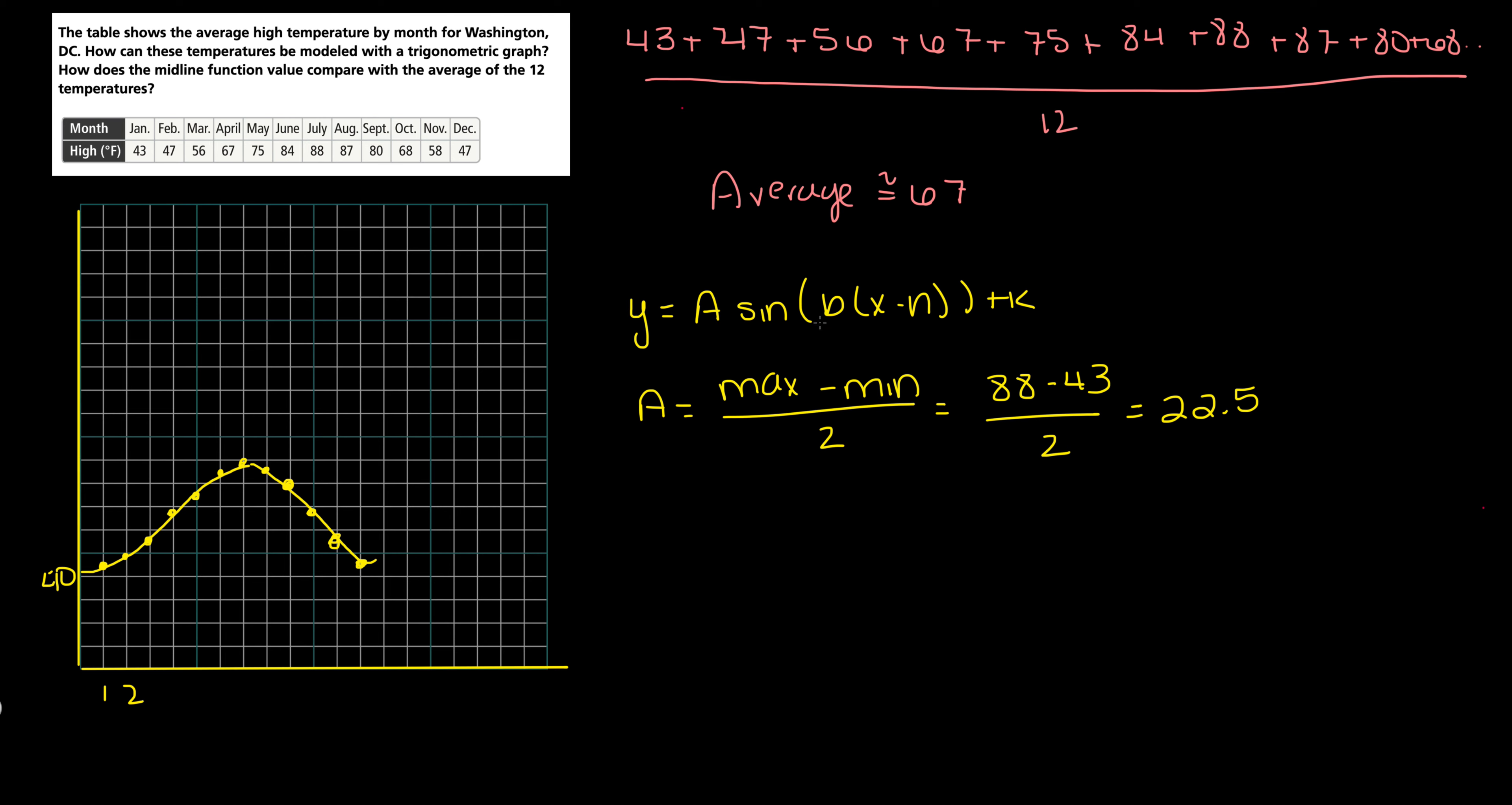Now my B, my period here. We're looking at 12 months. This is month 1, this is month 12. So we're looking at my period. Remember that your period equals 2π over B. Which means if we restructure this, B would equal 2π over your period. So we're looking at B is equal to 2π over 12 or π over 6.